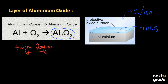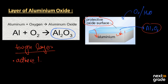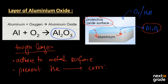This tough layer protects the underlying surface from further corrosion. That is why aluminum is widely used in the production of many types of materials in our daily life. When aluminum gets corroded once, it forms a protective oxide surface layer over its metal, and then it prevents the underlying surface from further corrosion. This tough layer adheres to the metal surface and prevents it from further corrosion.